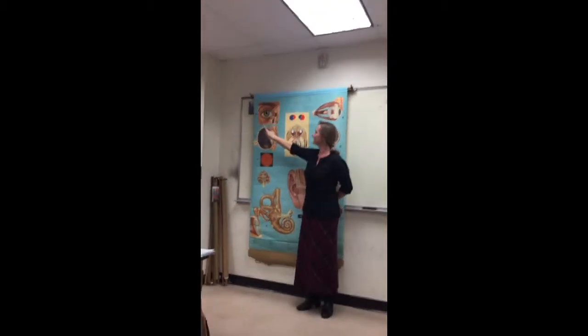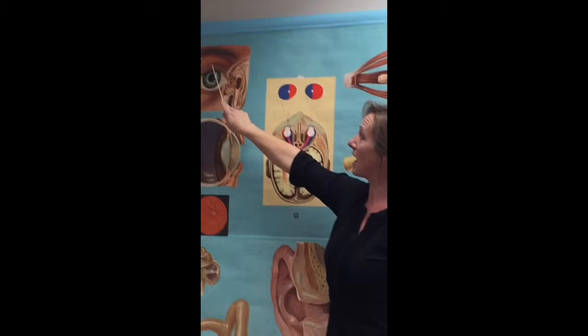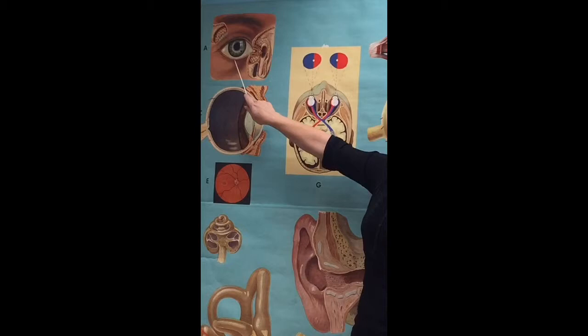Most people call these eyelids, so we have an upper eyelid and a lower eyelid. Now we can call them palpebrae - the upper palpebra and lower palpebra.